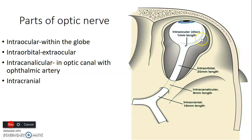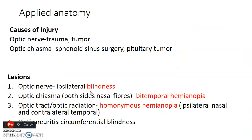The parts of the optic nerve include: intraocular (within the eyeball), intraorbital (within the orbit), canalicular (within the optic canal), and intracranial (within the cranial fossa). Causes of injury to the optic nerve include trauma such as skull fractures, tumors compressing the nerve, and tumors of the pituitary gland — which sits on the sella turcica on the body of the sphenoid — that can compress the optic chiasma.